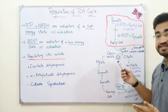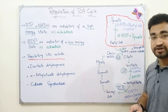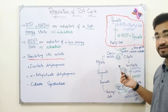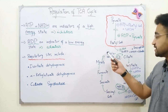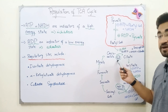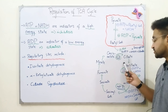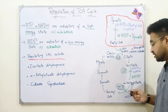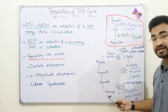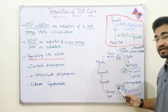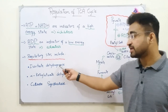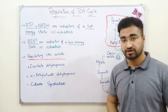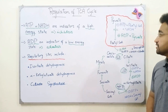Now let us look at which steps in the TCA cycle are called regulatory steps and which enzymes are working in them. In the TCA cycle there are three regulatory steps. The first step is where oxaloacetate is converted to citrate, with the enzyme citrate synthase. The second step is where isocitrate is converted to alpha-ketoglutarate, by isocitrate dehydrogenase. The third regulatory step is where alpha-ketoglutarate is converted to succinyl-CoA, by alpha-ketoglutarate dehydrogenase.